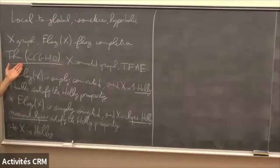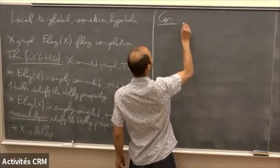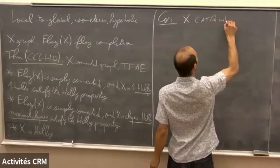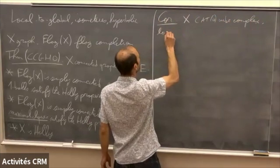Just from this result we can have a pretty simple consequence: the thickening of a CAT(0) cube complex. Because X is heli. X is a CAT(0) cube complex, say locally finite dimensional.